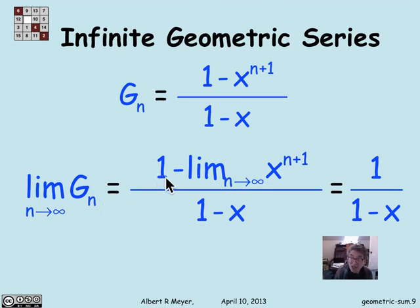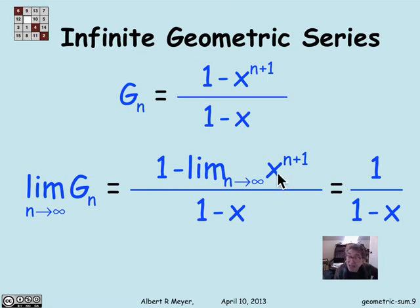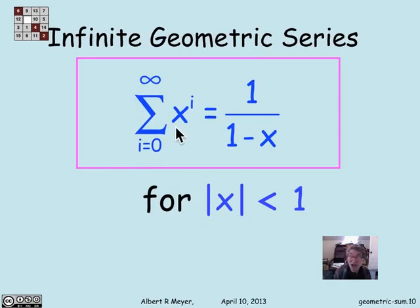Let's look at that. g_n is 1 minus x to the n plus 1, over 1 minus x. Taking the limit, it becomes 1 minus the limit as n approaches infinity of x to the n plus 1, divided by 1 minus x. As long as the magnitude of x is less than 1, x to the n plus 1 goes to 0, and we get the nice simple formula: the sum from i equals 0 to infinity of x to the i equals 1 over (1 minus x), provided |x| < 1.